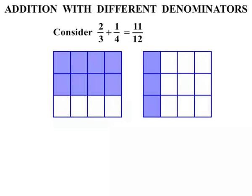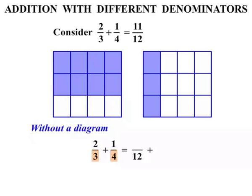Now let's go back to that diagram — two thirds plus one quarter — and see how we go without a diagram. Let's see if we can do some working out. So two thirds plus one quarter: again, we need to find what number both three and four go into. We said twelve, so we are going to be dealing with twelfths and change each fraction to be over twelve.